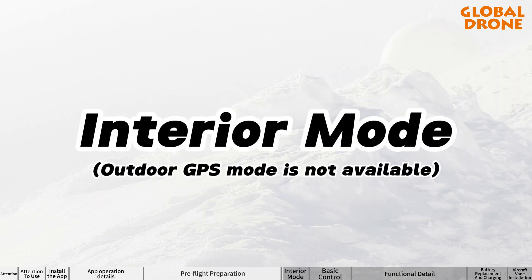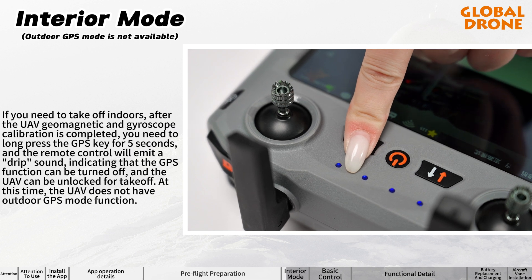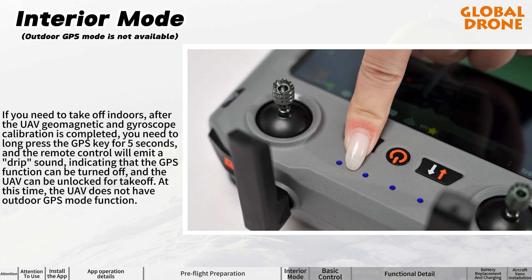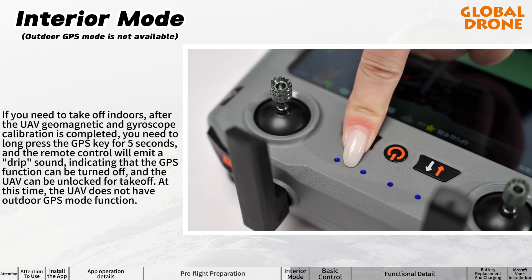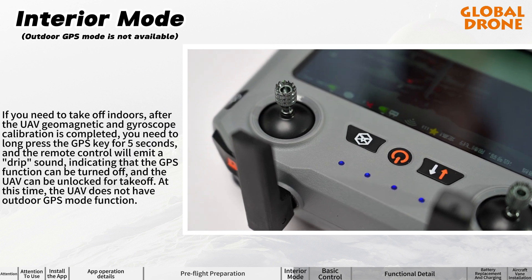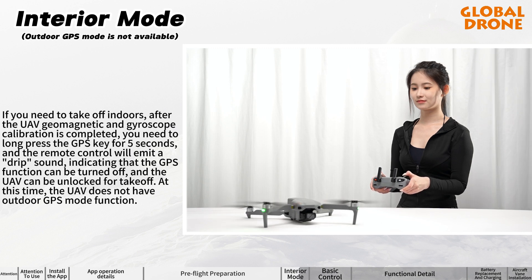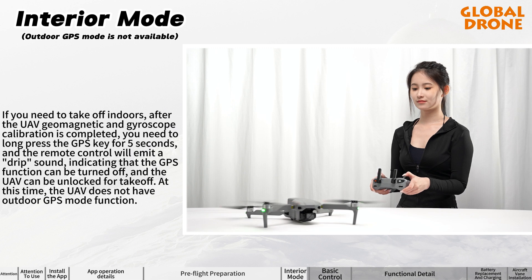Interior mode: if you need to take off indoors, after UAV geomagnetic and gyroscope calibration is completed, long press the GPS key for five seconds and the remote control will emit a drip sound, indicating the GPS function is turned off and the UAV can be unlocked for takeoff. At this time, the UAV does not have outdoor GPS mode function.